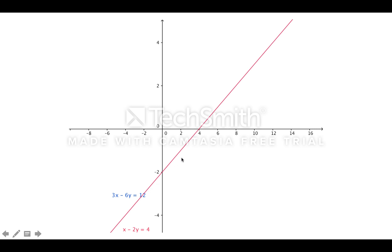So this blue line that's hidden under here is the line 3x minus 6y equals 12. You can check that on your own. That's what it looks like.